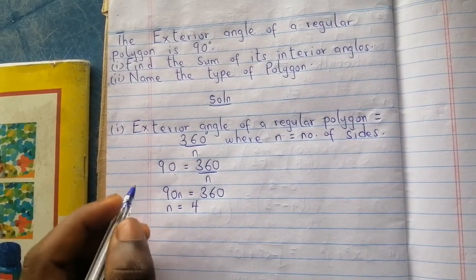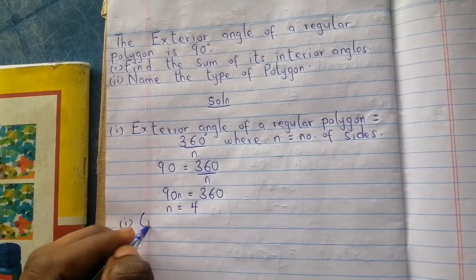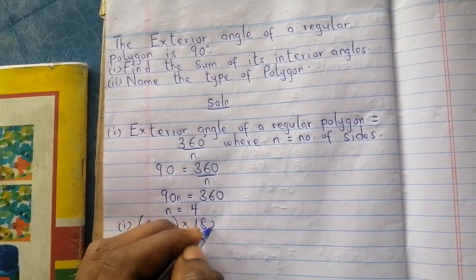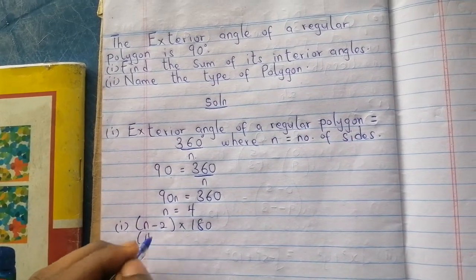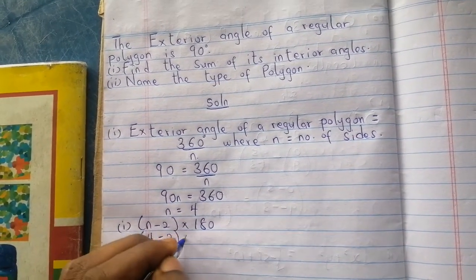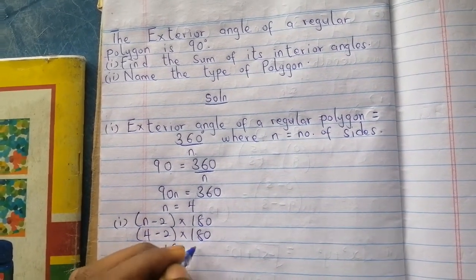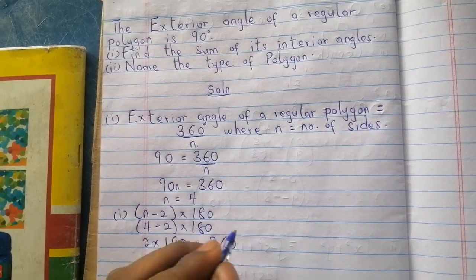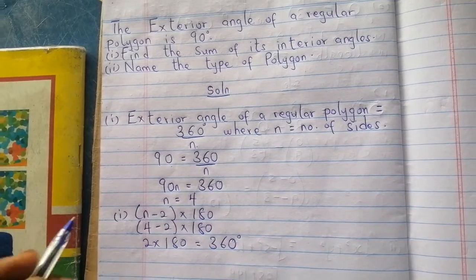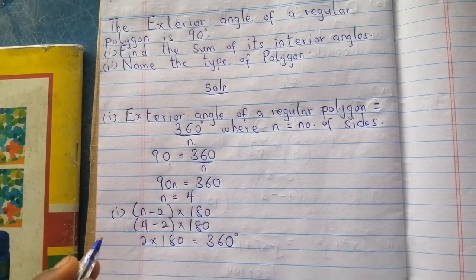The formula for finding the sum of the interior angle is n minus 2 times 180. n is 4, so 4 minus 2 times 180. 2 times 180 is giving us 360. So the sum of the interior angles is 360 degrees.